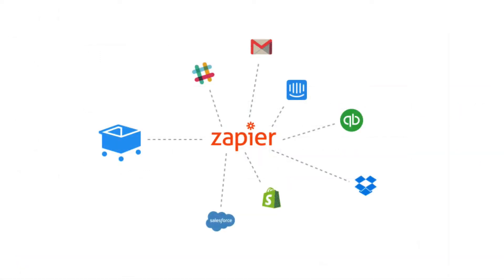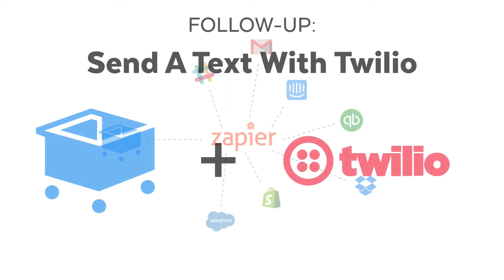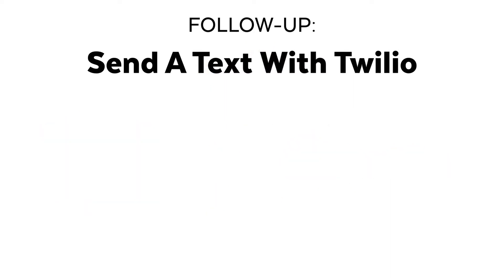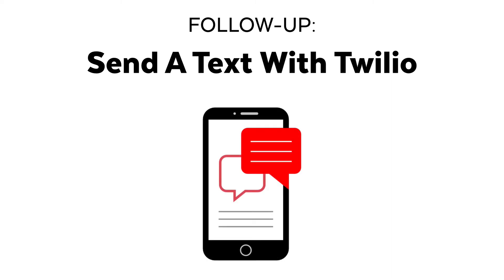And because Zapier connects to so many different apps, the possibilities are almost endless. So if you're looking for a few ideas of what to do with your new prospects, here's what we recommend. Send your prospects a text follow-up with Twilio — if your prospect provides a phone number, you can send them a text message within moments of leaving the checkout page.